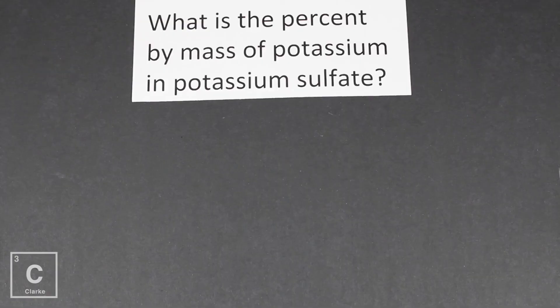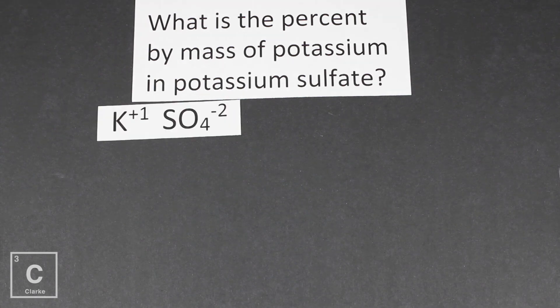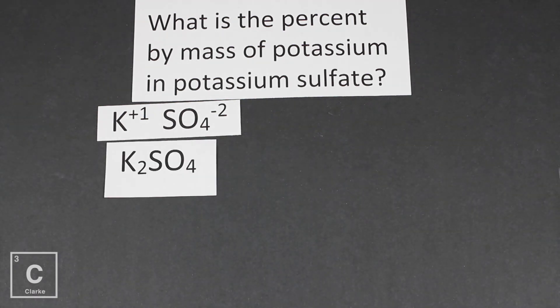Let's look at an example. What is the percent by mass of potassium in potassium sulfate? Let's remember, potassium is a plus one, sulfate's a minus two. So if we crisscross those numbers down, the compound that we're going to be using is K2SO4. And our question wants to know, out of that whole compound, what percent is made of just potassium, just the K?